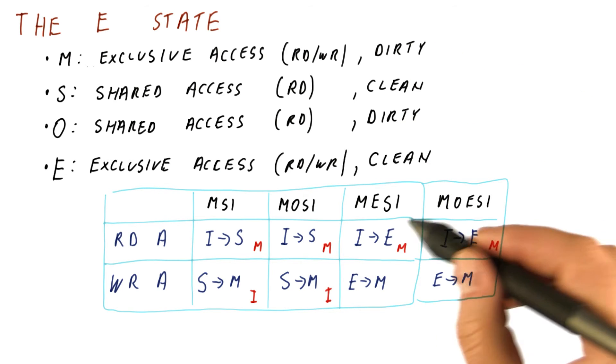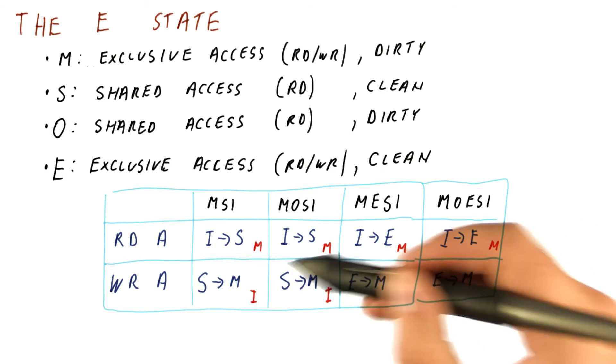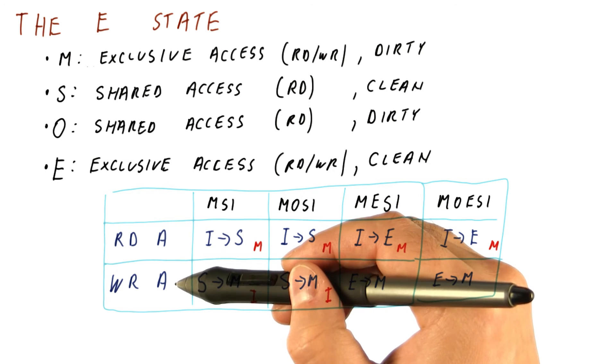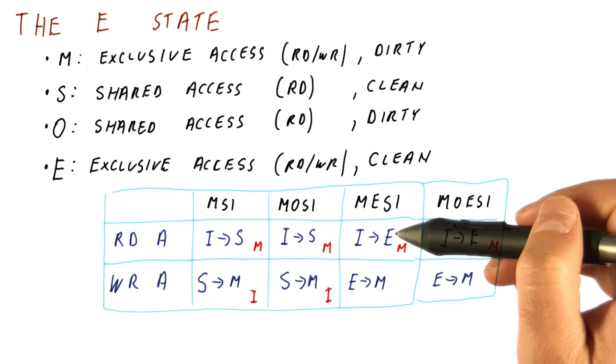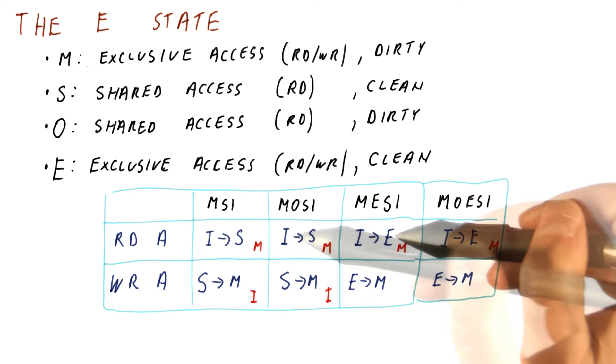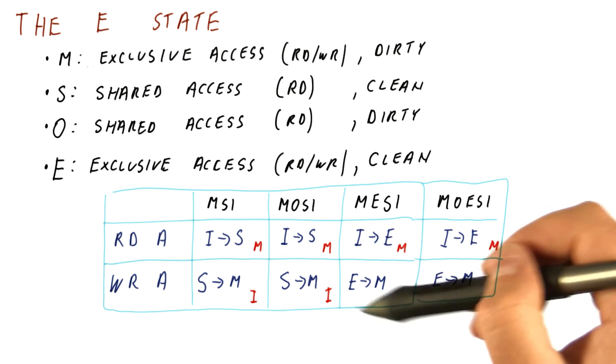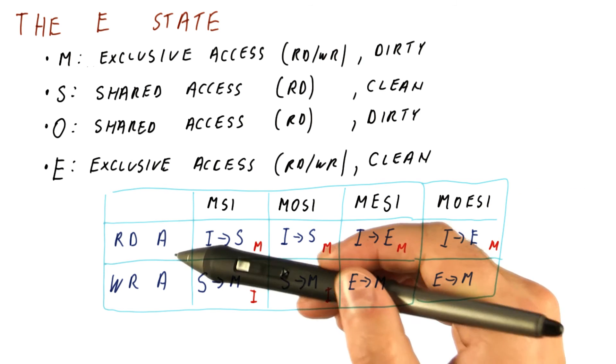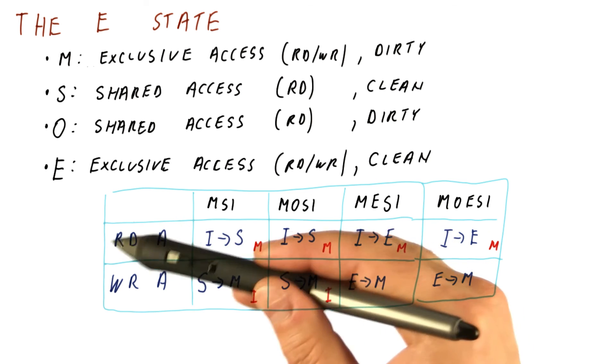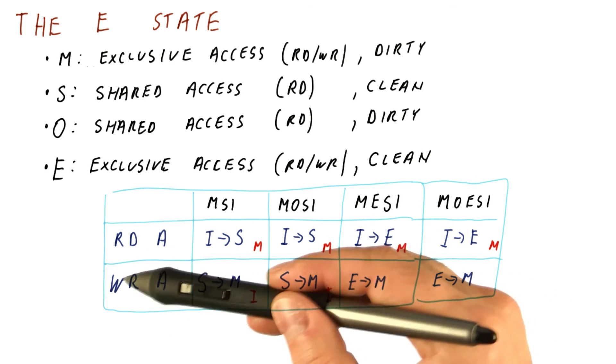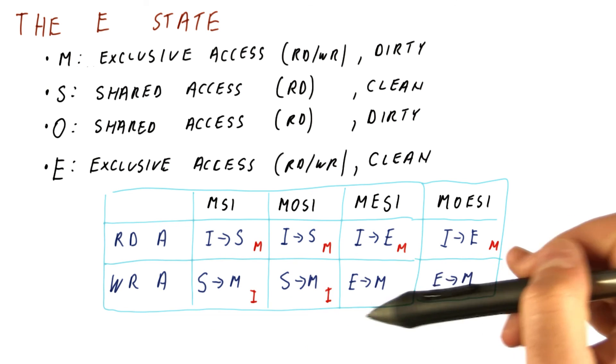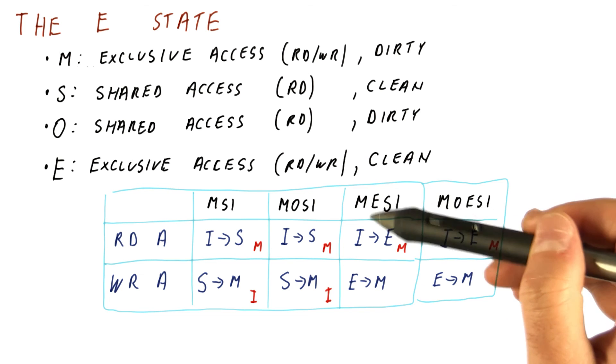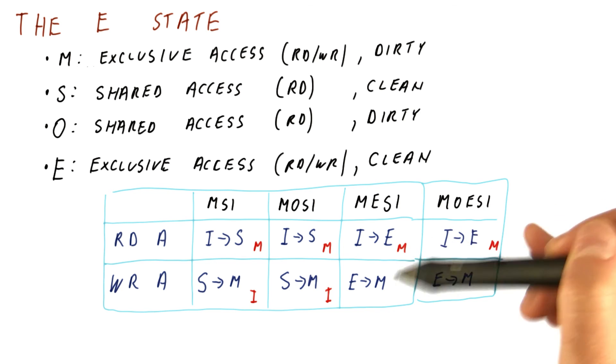So now we get the same behavior that we would get if we did this sequence of accesses on a cache in a uniprocessor. So this is not a shared block here, and we want to get the same number of misses and accesses as we do in a uniprocessor that doesn't share data. So here we will have a miss, followed by a cache hit. We want to have a cache hit here, and the E state allows us to achieve that.